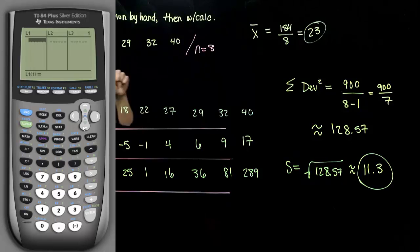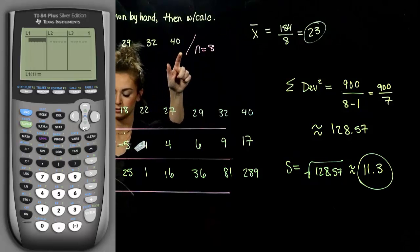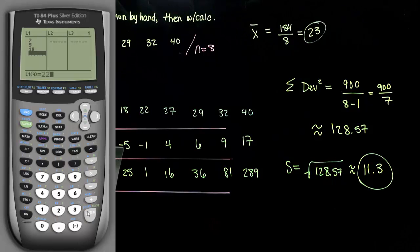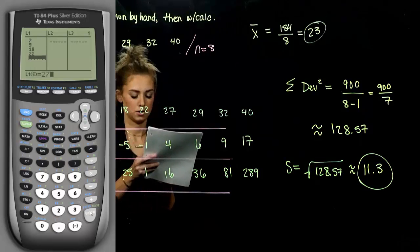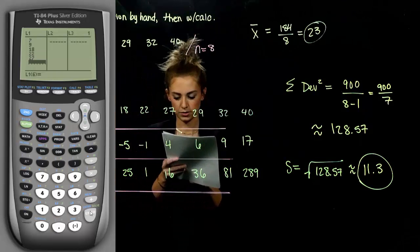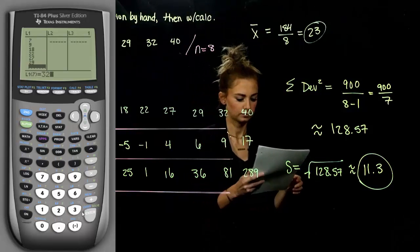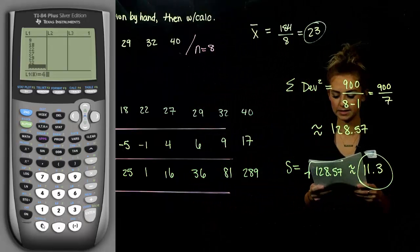We want to input our data values — every single entry, input it and then press Enter. So our values are 7, 9, 18, 22, 27, 29, 32, and 40. We've inputted the data and have 8 items.